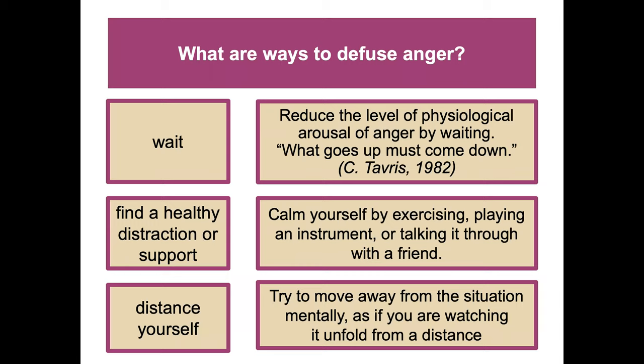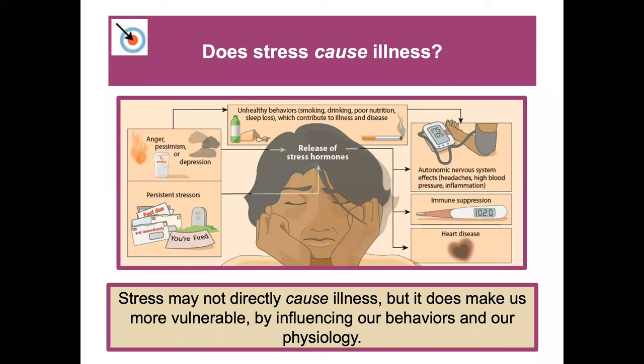What are ways to actually diffuse anger? Wait — reduce the level of physiological arousal by waiting; what goes up must come down. Find a healthy distraction or support: calm yourself by exercising, playing an instrument, or talking through it with a friend. Distance yourself: try to move away from the situation mentally, as if watching it from a distance. Stress may not directly cause illness, but it does make us more susceptible and vulnerable by influencing our behaviors and physiology.